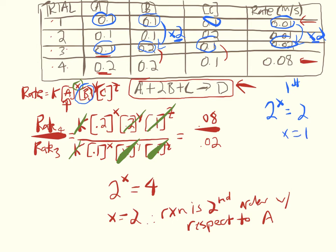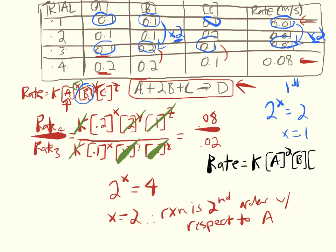You should now figure out the order with respect to C. Once you've done that, the overall rate law is: rate = K[A]²[B]¹. C turns out to be zero order, so [C]^0 doesn't appear in the rate law. This is the final answer for the rate law for this reaction.